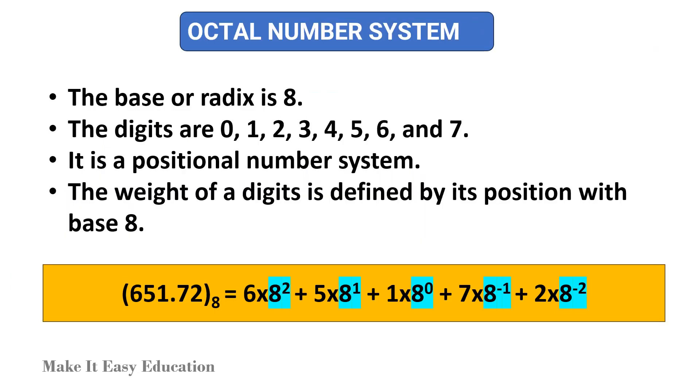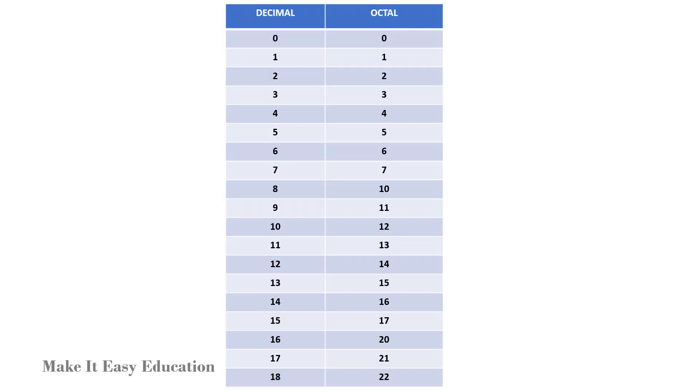Octal number system. The base or radix is 8. The digits are 0, 1, 2, 3, 4, 5, 6, and 7. It is a positional number system. The weight of a digit is defined by its position with base 8. The table shows the octal equivalent of the decimal number.